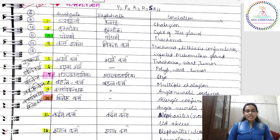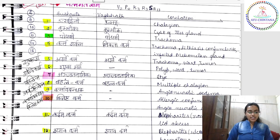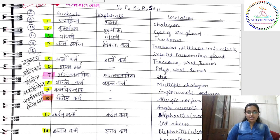Utsangini, Kumbhika, Pothaki, Vartma Sharkara, Arsho Vartma — we have discussed already. Utsangini, Kumbhika, Vartma Sharkara, and Arsho Vartma are Sannipataja Vyadhis, as marked with highlighters. Pothaki was a Kaphaja Vyadhi. Coming to the Sthana, all are Vartma Gata. The third point we discussed is whether each is Sadhya or Asadhya.